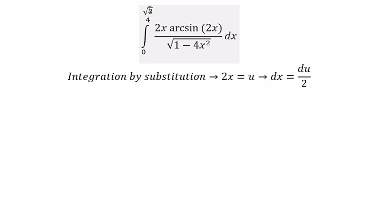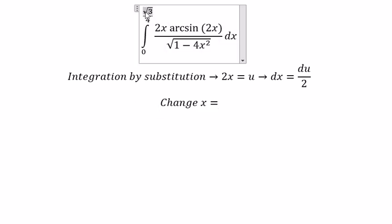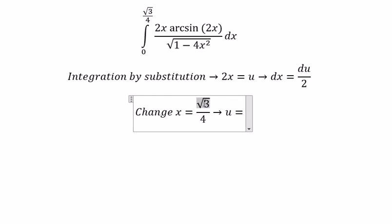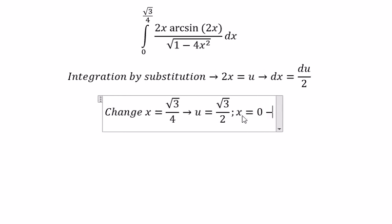Next we need to change the bounds. If s equals to this value, then u should be about the square root of number 3 over 2. If s equals to 0, then u should be about 0.